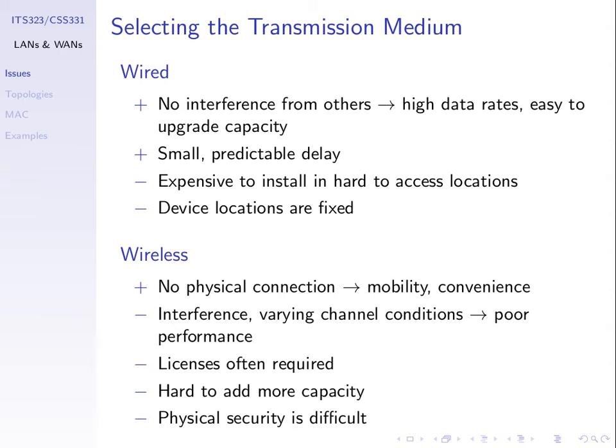With wired networks, we have very little interference so we can get a higher data rate. It's also easier to upgrade capacity by adding a new wire. For example, if my LAN cable supports one gigabit per second and I want two gigabits per second, I add another LAN card and plug in a second cable. The transmissions across those two cables do not interfere with each other, so with wired networks we can easily upgrade capacity.